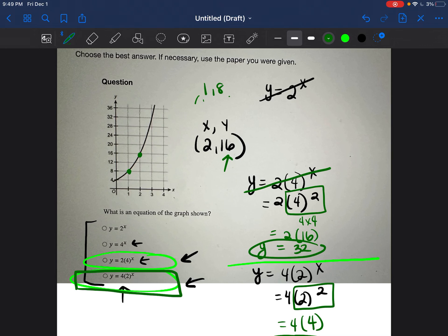we started with the point 1 comma 8 and we plugged that into all the equations. And we were able to eliminate the first two equations because it didn't work out. But the last two equations worked out.